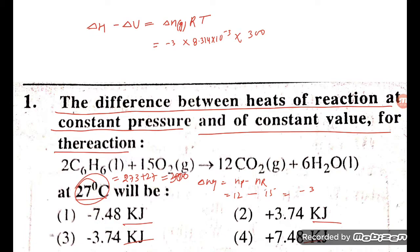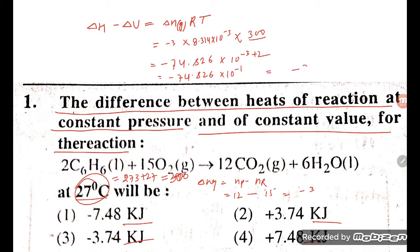Let me do the calculation: minus 3 multiplied by 8.314 gives minus 74.826 × 10⁻³, which combined with 10² from 300 gives 10⁻¹. So it comes to minus 7.4826 kilojoules.